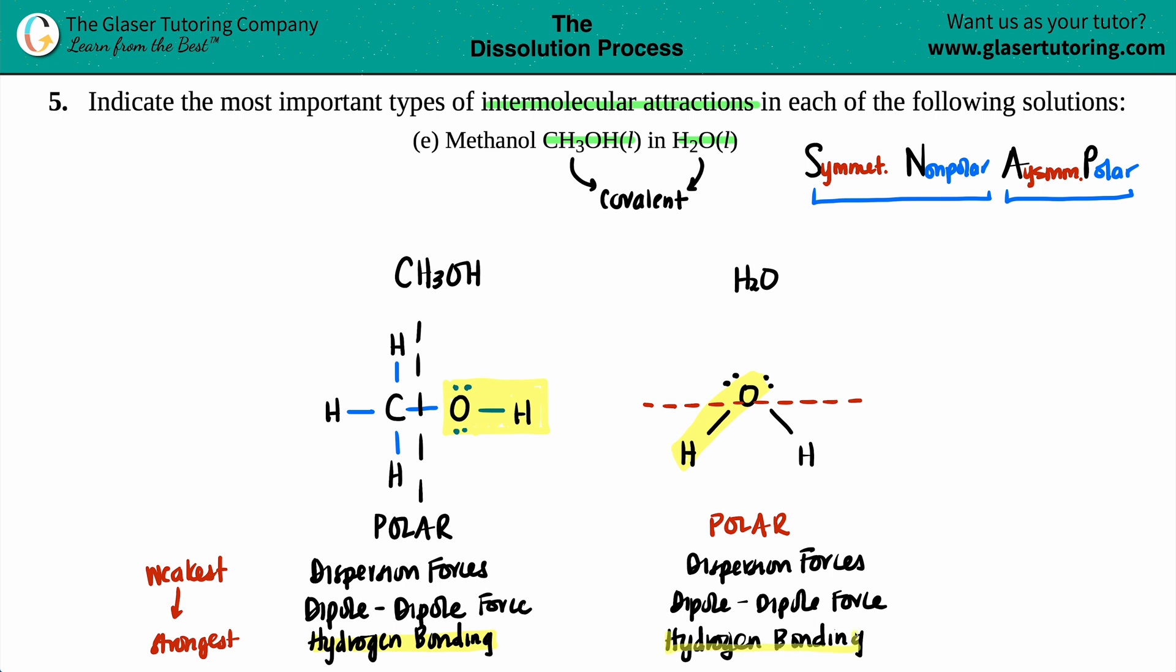So the strongest force that methanol can exhibit is hydrogen bonding because of that OH. And the strongest force that water can exhibit is also hydrogen bonding. So since they both can hydrogen bond, the most important type, aka the strongest, that's basically what this means.